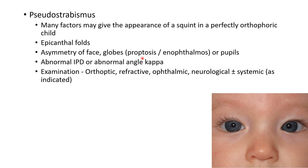There can also be pseudo-strabismus because of proptosis or enophthalmos. Other causes include abnormal interpupillary distance or abnormal angle kappa.